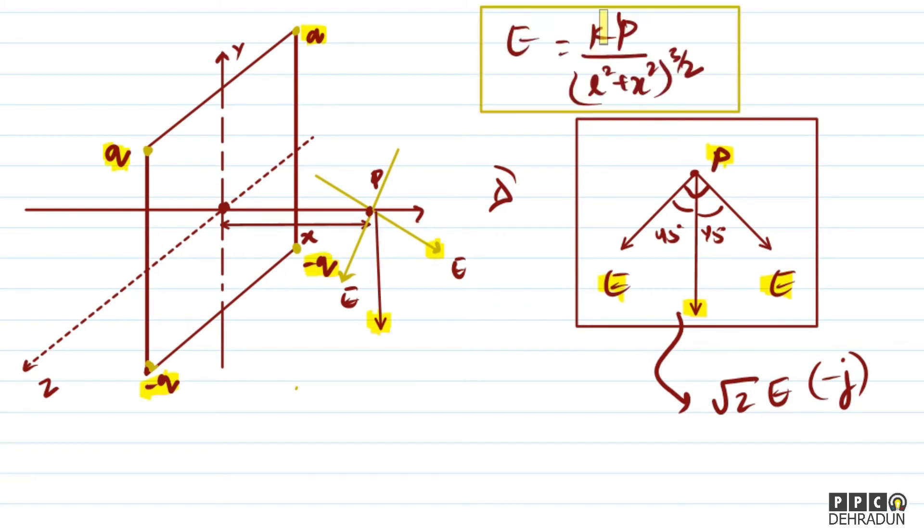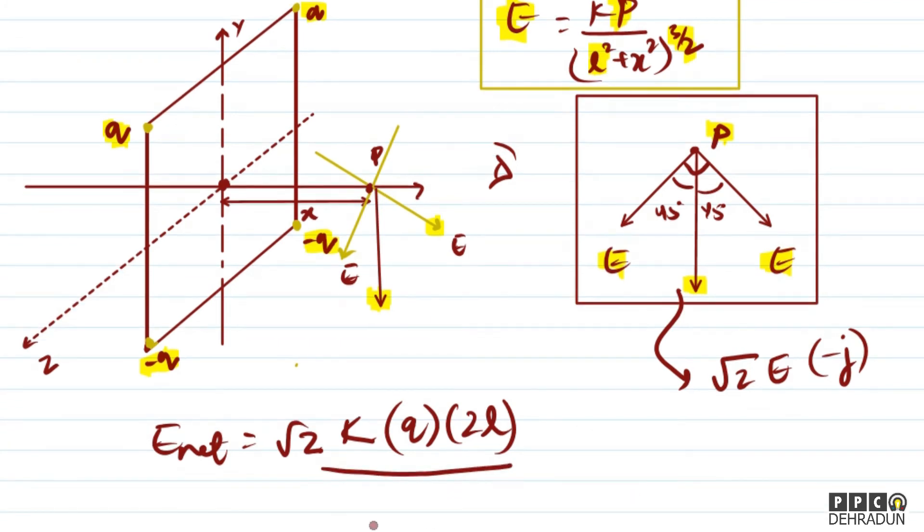Using the formula, E net is root 2 multiplied by kp divided by L squared plus x squared to the power 3 by 2. Now p is q multiplied by distance 2L, so we get root 2 k q times 2L divided by L squared plus x square power 3 by 2.